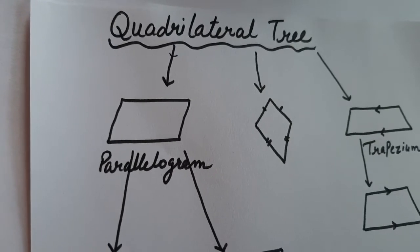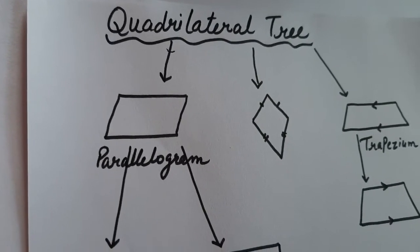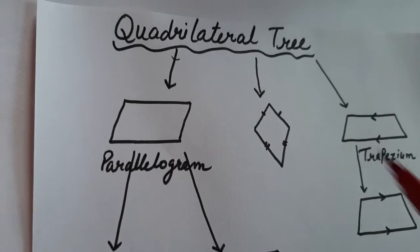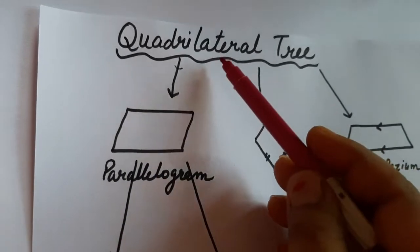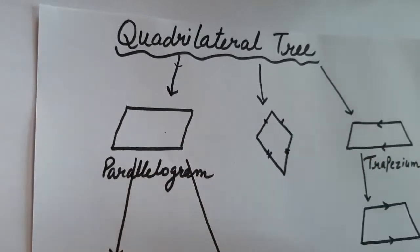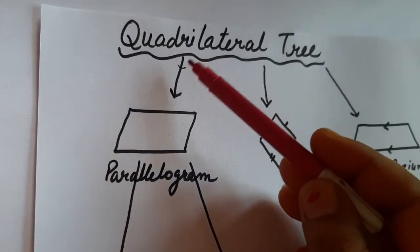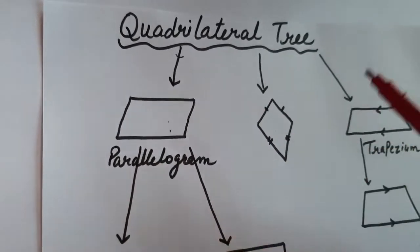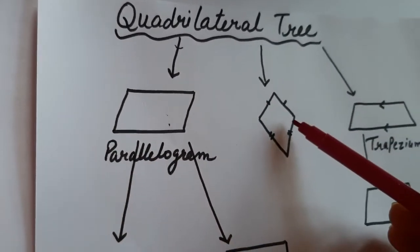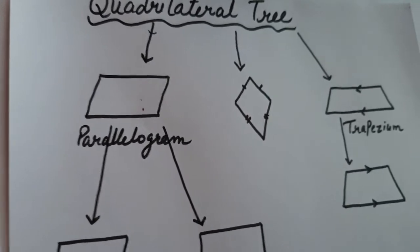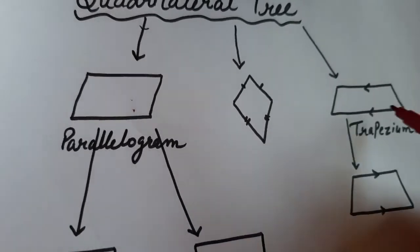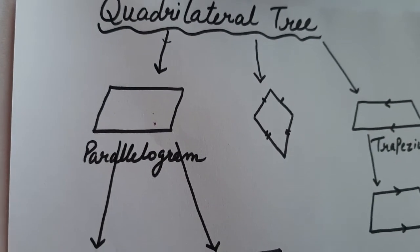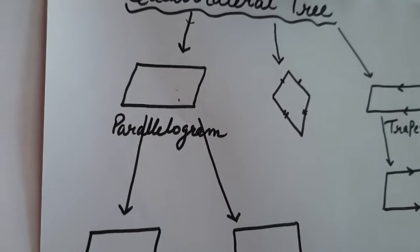Good morning to all of you. Today I am going to discuss the topic: the quadrilateral tree. In a quadrilateral tree, we have a parallelogram, a kite, and a trapezium. Let us discuss them one by one.